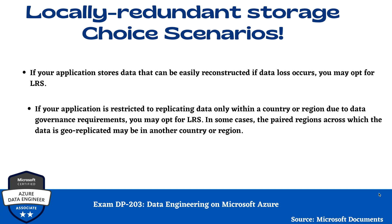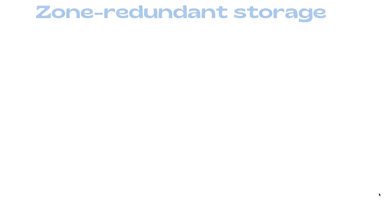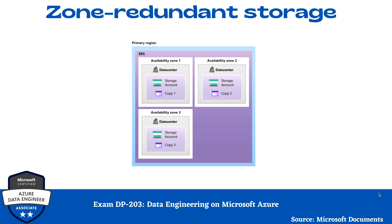Now we are going to talk about Zone Redundant Storage. ZRS replicates your Azure Storage data synchronously across three Azure Availability Zones in the primary region. Each Availability Zone is a separate physical location with independent power, cooling, and networking. ZRS offers durability of Azure Storage data objects of at least 12 nines over a given year. With ZRS, your data is still accessible for both read and write operations even if a zone becomes unavailable. If a zone becomes unavailable, Azure undertakes networking updates such as DNS repointing, which may affect your application before the updates complete.